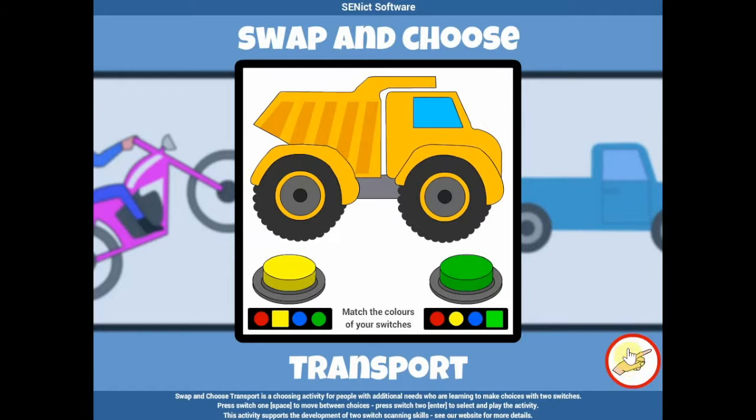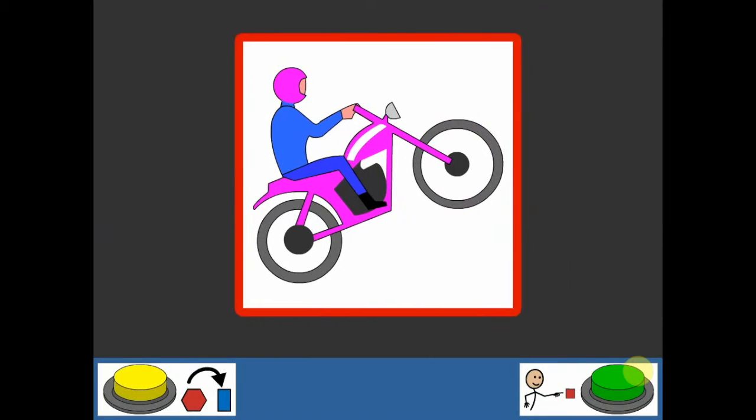When you're ready to start, click here. You'll see on the screen a large flashcard and two symbols at the bottom of the screen. The symbol to the left denotes switch one and shows the color that you've chosen. It also shows the symbol for Change.